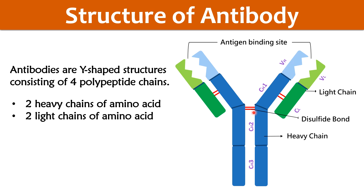Heavy chains are bound to each other by disulfide bonds. Heavy chains and light chains are also bound to each other by disulfide bonds. Heavy chains differ in all antibodies and are of five types: namely alpha, gamma, mu, delta, and epsilon. Whereas light chains are of two types — kappa and lambda — and they are the same in all antibodies.